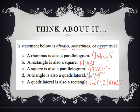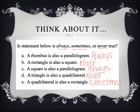Here are the correct answers. A rhombus is also a parallelogram — this is always true, because a parallelogram has two parallel sides on each side, and a rhombus has both of those things. A rectangle is also a square — this is never true, because a square is a special type of rectangle, so any old rectangle cannot be a square. A square is also a parallelogram — always true, because a parallelogram has two sets of parallel sides, and a square definitely has those. A triangle is also a quadrilateral — never true, because quadrilateral means four sides and a triangle only has three. A quadrilateral is also a rectangle — sometimes true, because a rectangle can be a quadrilateral, but not all quadrilaterals are rectangles; we also have trapezoids, parallelograms, rhombuses, and squares.